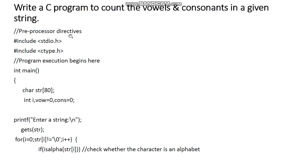We have the first preprocessor directives. We need two header files here. One is the standard input-output and another is the character type.